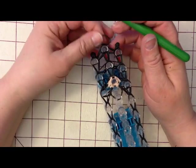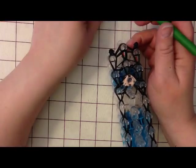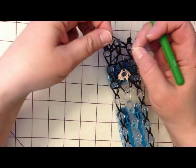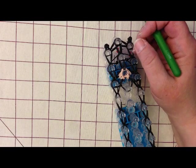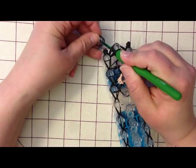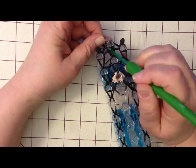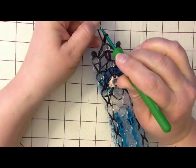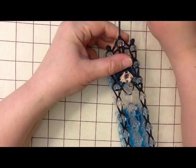Another one. These are official rainbow loom bands and they are all breaking on me. I just opened the packet. Not very impressed. Try that with some different. There we go. Grab the two top ones up, over and off and pull tight.